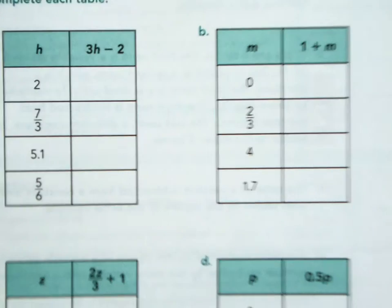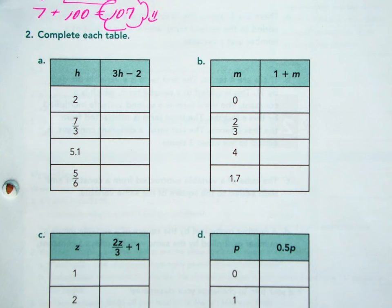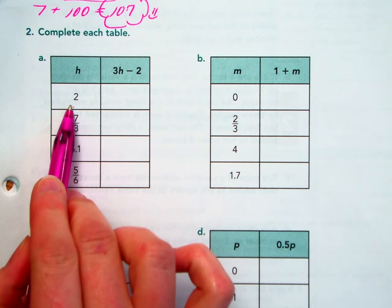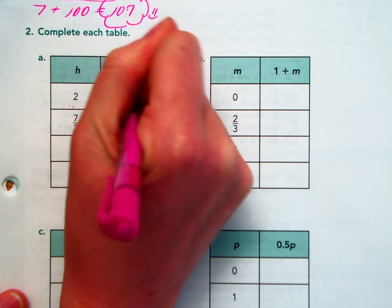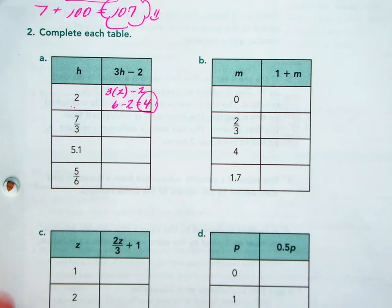Now, on part 2, they have all these tables in which they want to change the value in which the variable is going to be. And if you change what the variable is worth, the expression isn't going to have the same answer each and every time. For example, this time, H is going to be worth 2. So you're going to be 3 times 2 minus 2, which is 6 minus 2, which is 4. Right there, you would be 4.